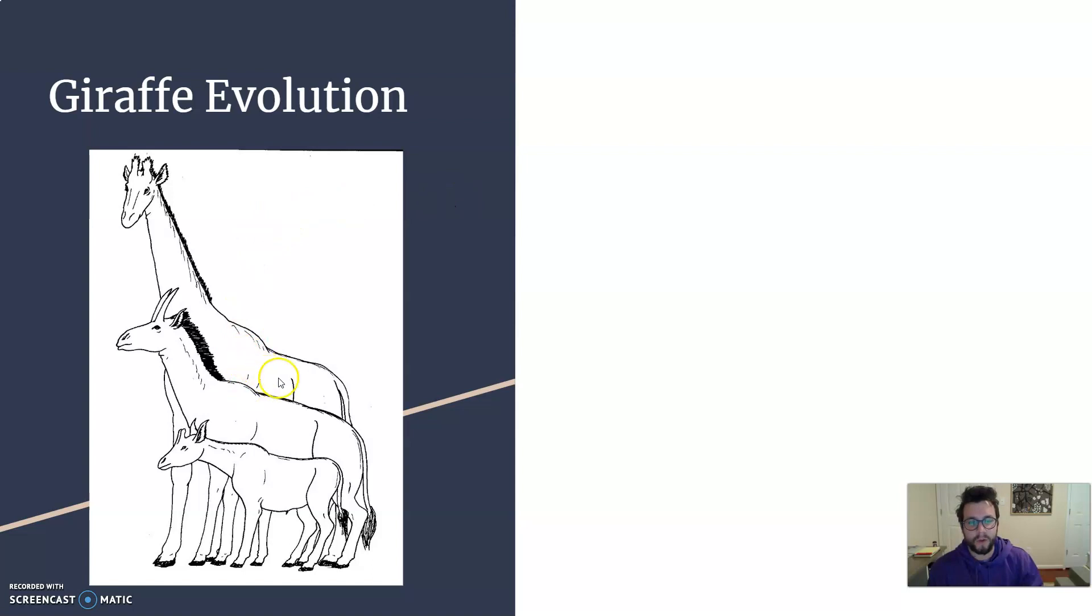We've got the giraffe, so we have fossil evidence that links some older extinct organisms that were similar to giraffes and intermediate forms that would lead to the long neck giraffe that we see today. So we have some evidence that shows that they have changed over time, that they have evolved.